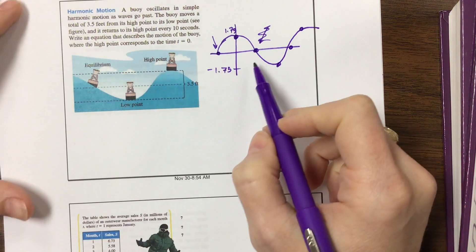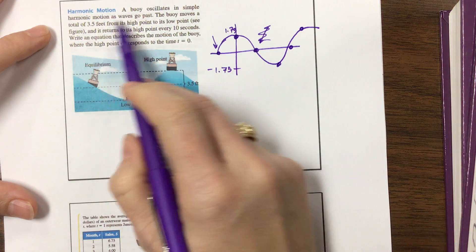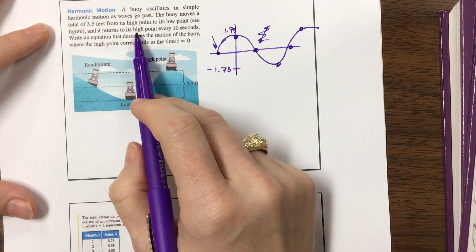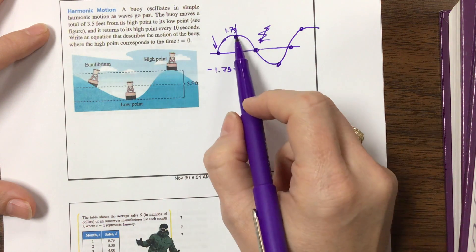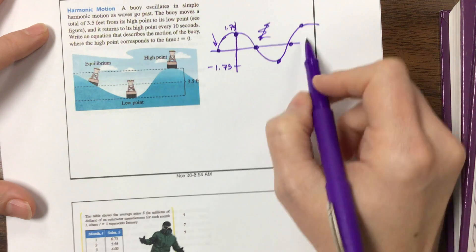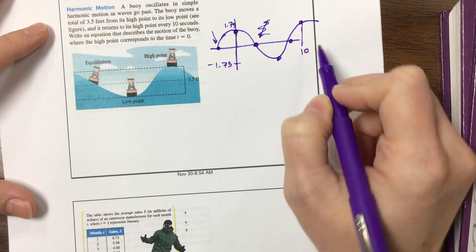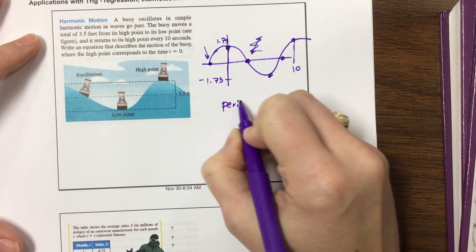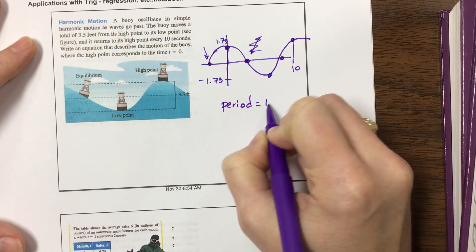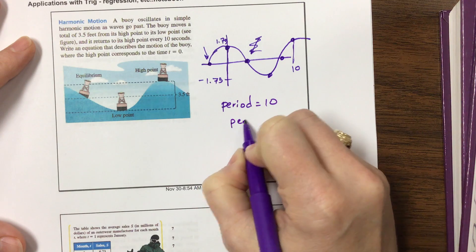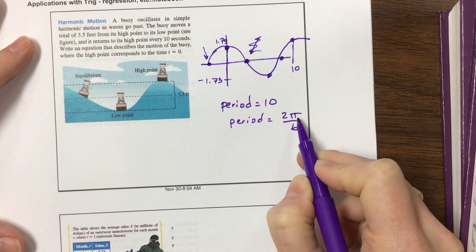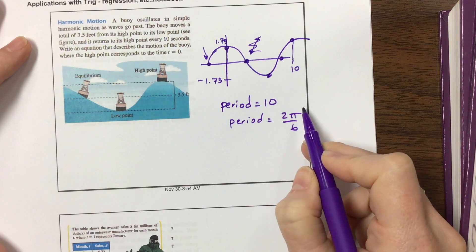So they're telling us the buoy moves a total of 3.5 feet from its high point to its low point, and returns to its high point every 10 seconds. So this would be at time 0, this right here would be at time 10. So that tells us that the period is equal to 10, but we know that the period is also equal to 2π over b, since the parent function period of cosine is 2π.